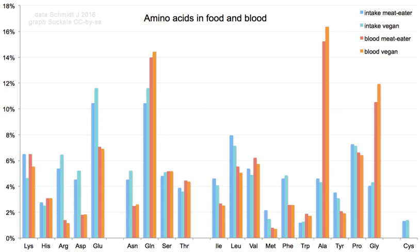The first few amino acids were discovered in the early 19th century. In 1806, French chemists Louis Nicolas Vauquelin and Pierre-Jean Robiquet isolated a compound in asparagus that was subsequently named asparagine, the first amino acid to be discovered. Cysteine was discovered in 1810, although its monomer, cystine, remained undiscovered until 1884.